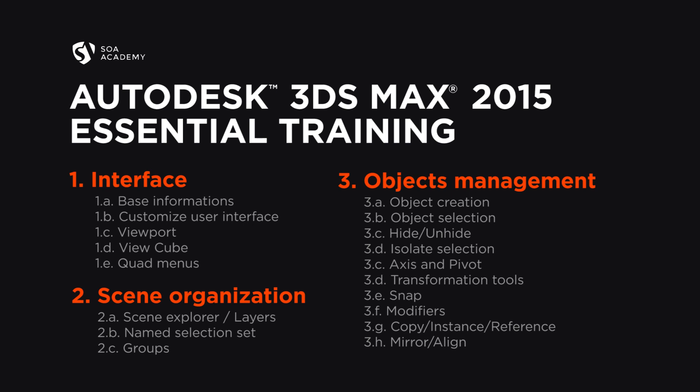Point three: Object Management. In the last part, we're going to see how to create objects and how to work with them — selection, hide and unhide of objects, and easy selection for when you have more than one object in the scene. Axes and pivot, transformation tools, snap, modifiers — basically the core of modeling in 3DS Max — how to copy, how to create instances or references of an object, and how to mirror and align your objects in the scene.